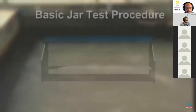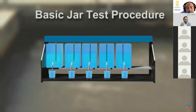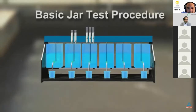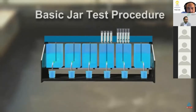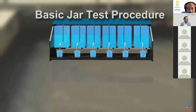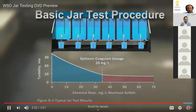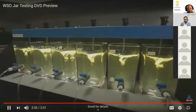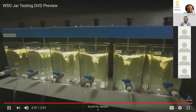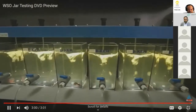The basic jar test procedure involves collecting a raw water sample and adding progressively larger doses of coagulant chemical to several jars. Results identify optimal conditions for turbidity removal. Multiple jars are typically used to examine different conditions and simulate multiple treatment characteristics.